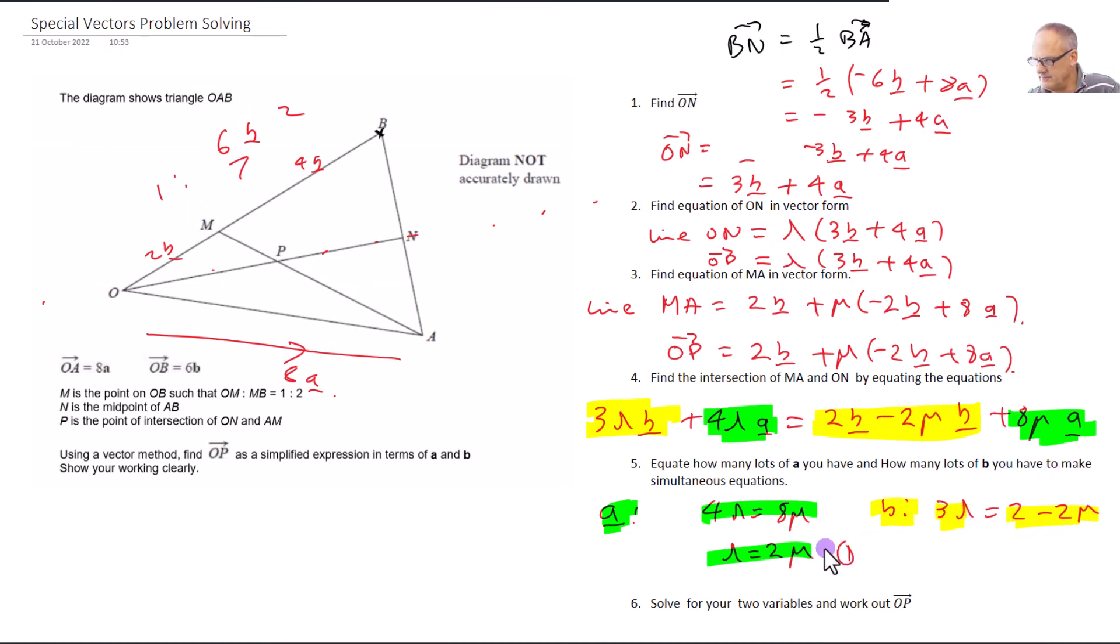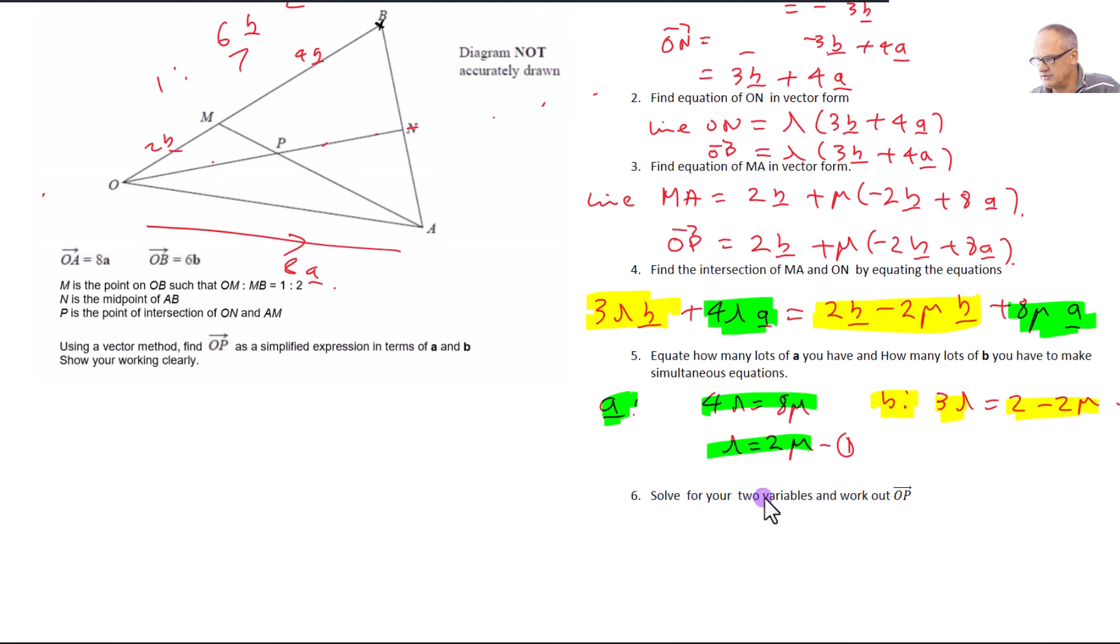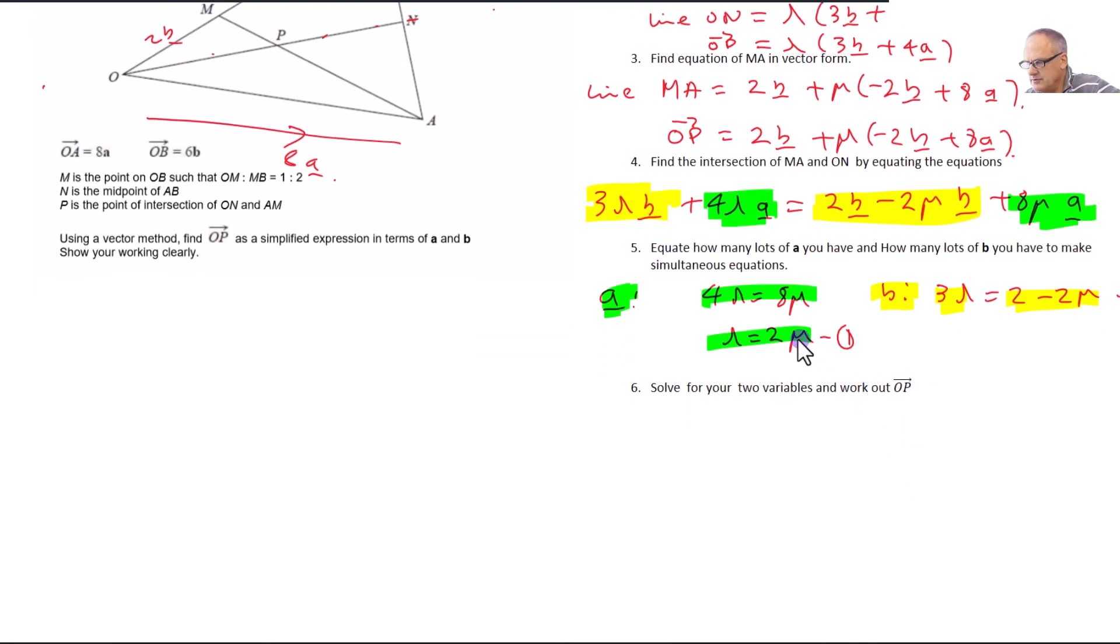So we're going to call this equation 1 and we're going to call this equation 2. And if we substitute equation, we're going to solve our two variables to work out OP. So we're going to put equation 1 into equation 2. So lambda here is equal to 2 mu, so we can replace this lambda with that 2 mu. So we get 3 times 2 mu equals 2 minus 2 mu. So I get 6 mu equals 2 minus 2 mu. Add 2 mu to both sides. So I get 8 mu equals 2, so mu equals a quarter.